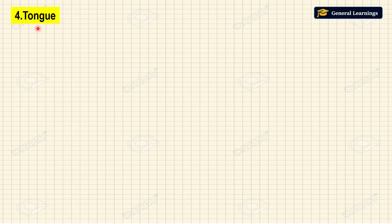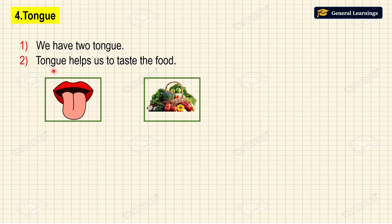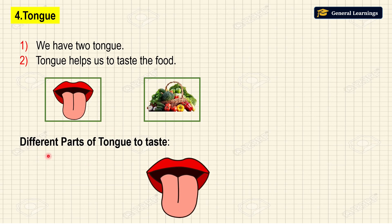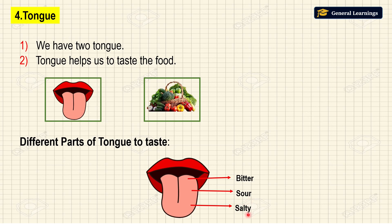Next we are going to see about tongue. We have one tongue. Tongue helps us to taste the food. Now we will see what are the parts present in our tongue. This part is called bitter, this part is sour, this part is salty, and this part is sweet.